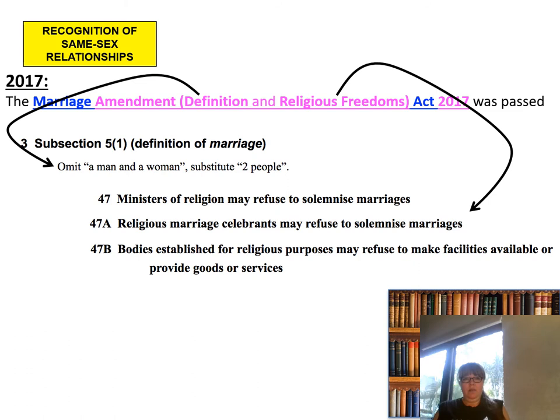In 2017, the Marriage Amendment (Definition and Religious Freedoms) Act 2017 was actually passed. What changed? Subsection 5.1, the definition of marriage: 'omit' — that means remove — 'a man and a woman' and substitute 'two people.' So a marriage now occurs between two people instead of between a man and a woman.